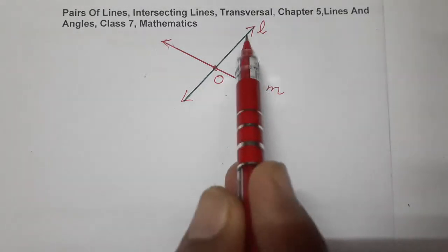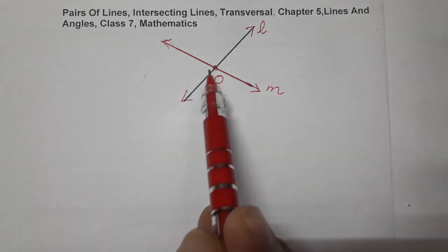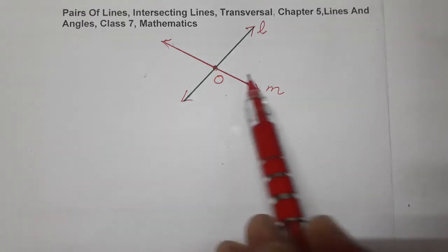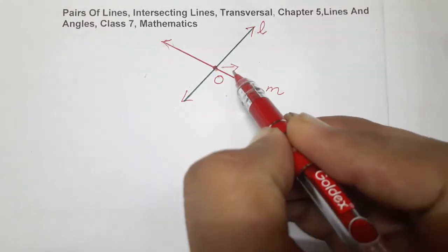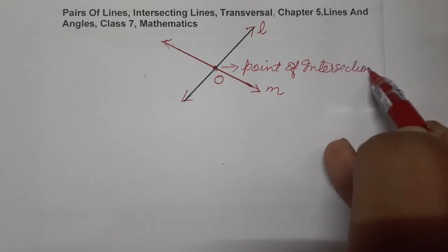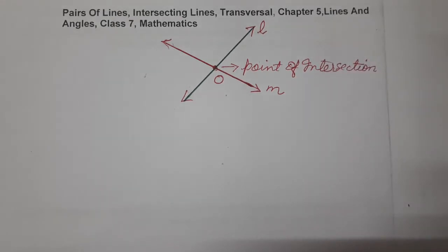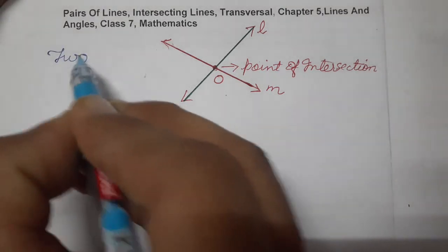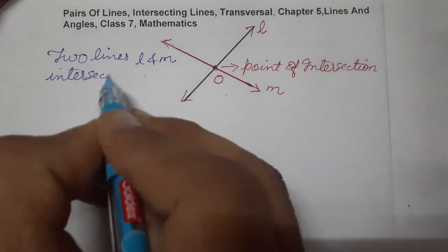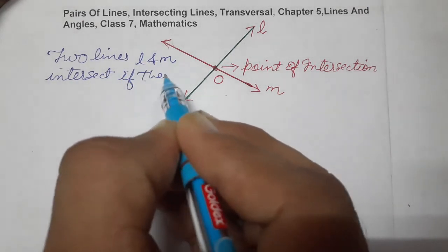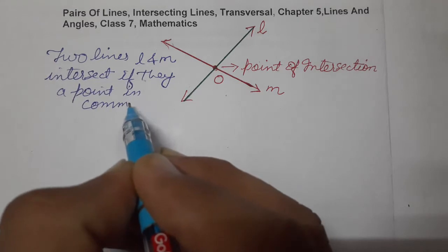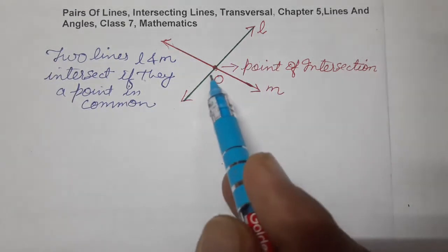Two lines intersect if they have a point in common. Agar point dono mein common hota hai, then they are called intersecting lines. This common point is called the point of intersection. So we write the definition: two lines L and M intersect if they have a point in common. Such lines are called intersecting lines.